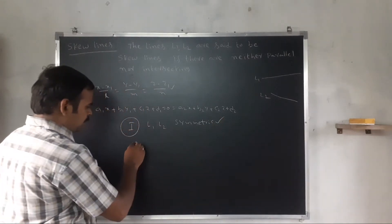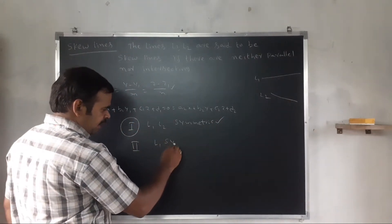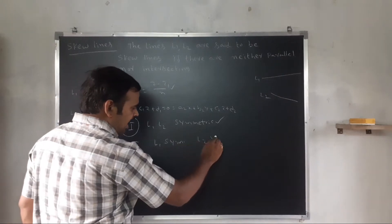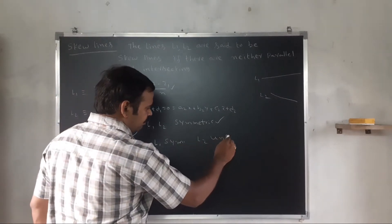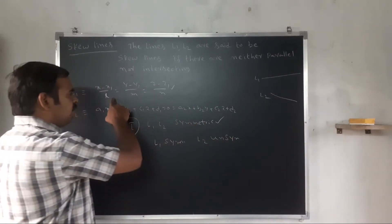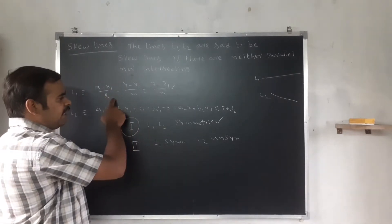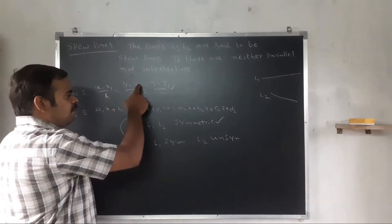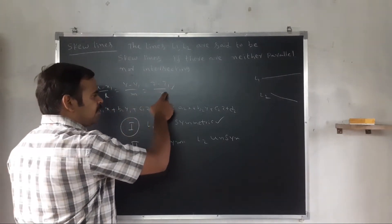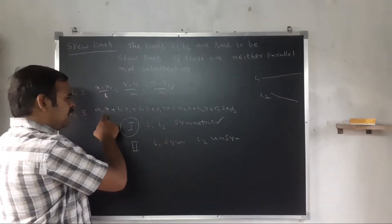Method 2: L1 is in symmetric form and L2 is in unsymmetric form. The first line equation uses the symmetric formula (x - x1)/l = (y - y1)/m = (z - z1)/n, and the second line uses the unsymmetric form.